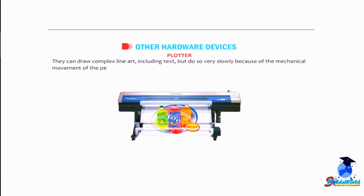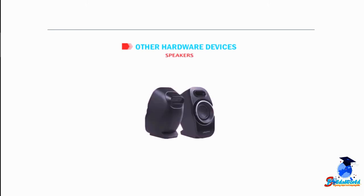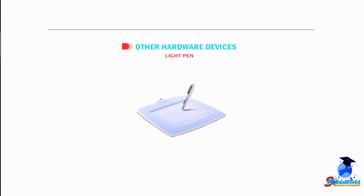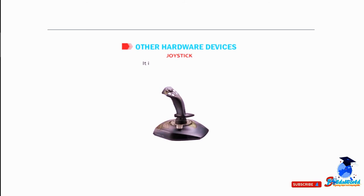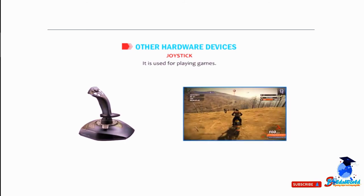Speakers are used to listen to music and sound stored in a computer. A light pen looks like a pen that can be used on a special pad; whatever you write on the pad is visible on the monitor. A joystick is used for playing games and helps to move items on the screen.